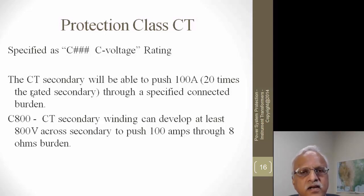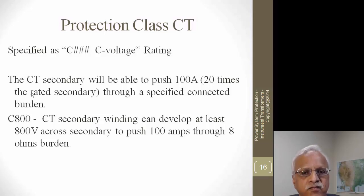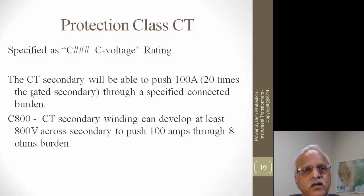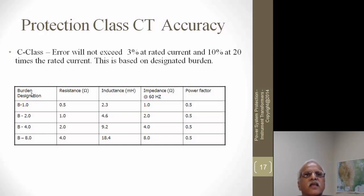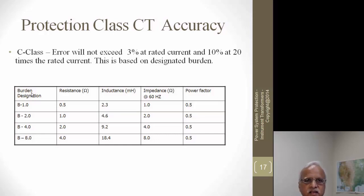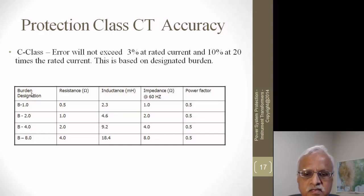C800 means the CT can develop 800 volts when 8 ohms is connected as a burden and 100 amps is flowing — so this CT is capable of developing 800 volts to push 100 amps through an 8-ohm burden. The burden for protection class is defined differently from metering: here the power factor is 0.5 rather than 0.9, meaning it is more inductive, reflecting the nature of relay coils.